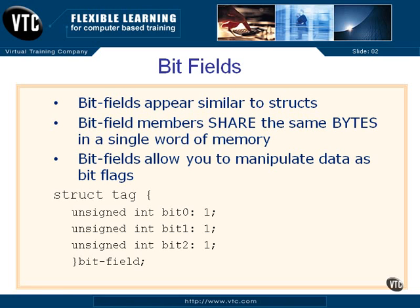Here's how you create a bit field. You use the keyword struct, just like with a normal structure, with a tag, an open brace, and then an unsigned integer — we're going to call it bit_zero. This is the variable name; it can be whatever you need it to be. Then a colon, and the number of bits assigned to this first variable — just one bit there. Then bit_one and bit_two, each one bit. So we're only going to take up three bits total.